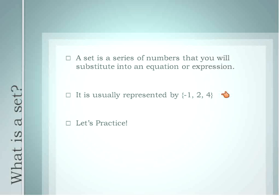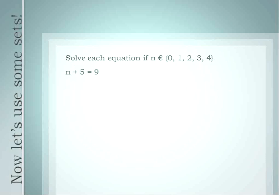Let's practice just a little bit with sets and I think it'll make a little bit more sense. So if we're asked to solve this equation, n plus 5 equals 9 — some number plus 5 equals 9 — and we're given that the solution is either 0, 1, 2, 3, or 4. So our replacement set is the numbers 0, 1, 2, 3, 4.